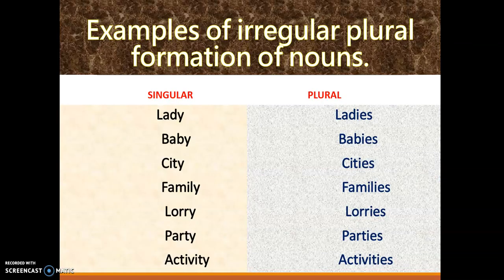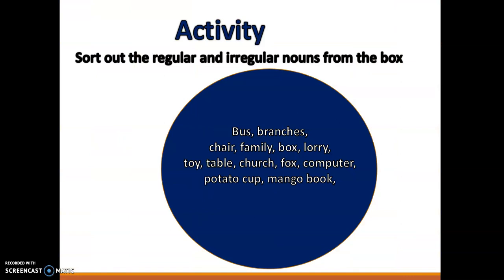Now, examples of irregular plural formation of nouns where we have consonants before the 'y'. Consonant before the 'y', and we said it takes 'ies'. So we have lady-ladies, baby-babies, city-cities, family-families, lorry-lorries, party-parties, activity-activities. Well done, Teacher Francis. Thank you, Teacher. And please, can you roll it up for me? Roll it up and let it go. Wow!